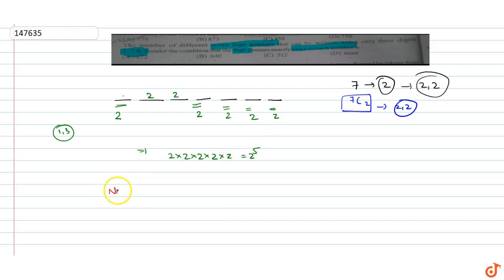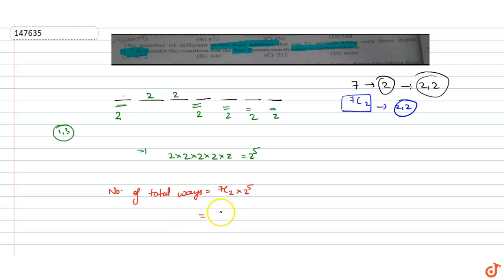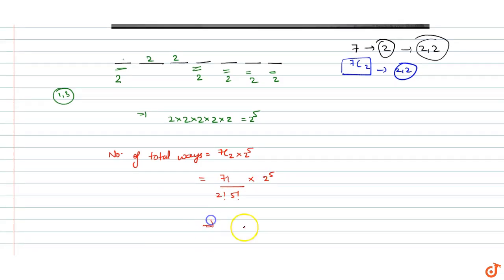इसका मतलब, number of total ways for arranging such numbers = 7C2 × 2^5। अब इसको solve करते हैं: 7C2 = 7! / (2! × 5!) × 2^5। 7! को लिखते हैं 7 × 6 × 5!, और 2! = 2 × 1, so it becomes 7 × 6 × 5! / (2 × 5!) × 2^5।